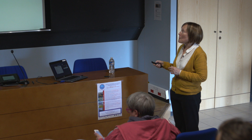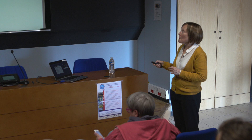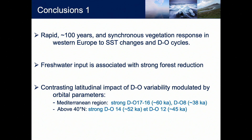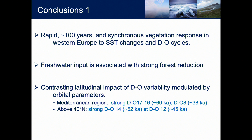The conclusion of this first part is that we have identified rapid — more or less 100 years — asynchronous vegetation responses in Western Europe to sea surface temperature changes and Dansgaard-Oeschger cycles. During freshwater inputs, particularly during Heinrich events, there is a strong forest reduction, and we have semi-desert landscapes in southern Iberia and steppe environments further north — similar to the central European steppe. There is also an important regional response of the abrupt climatic variability, with different expressions in the Mediterranean region, above 40 degrees north, and in Greenland.